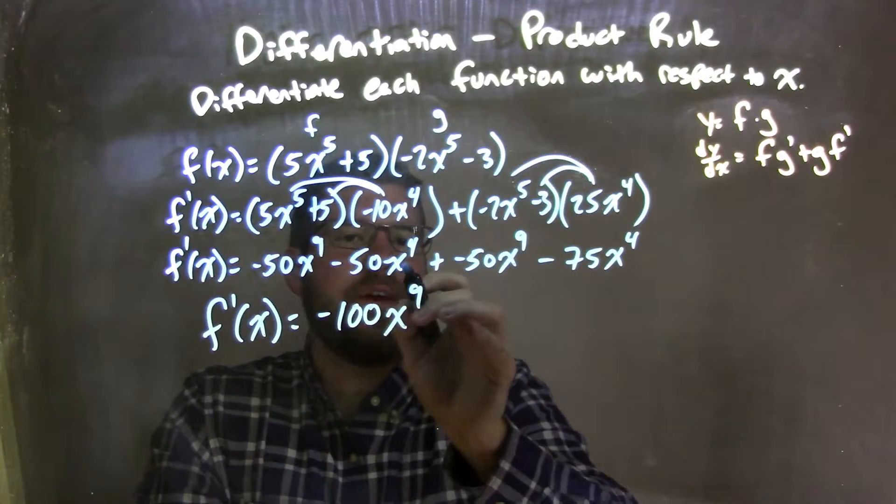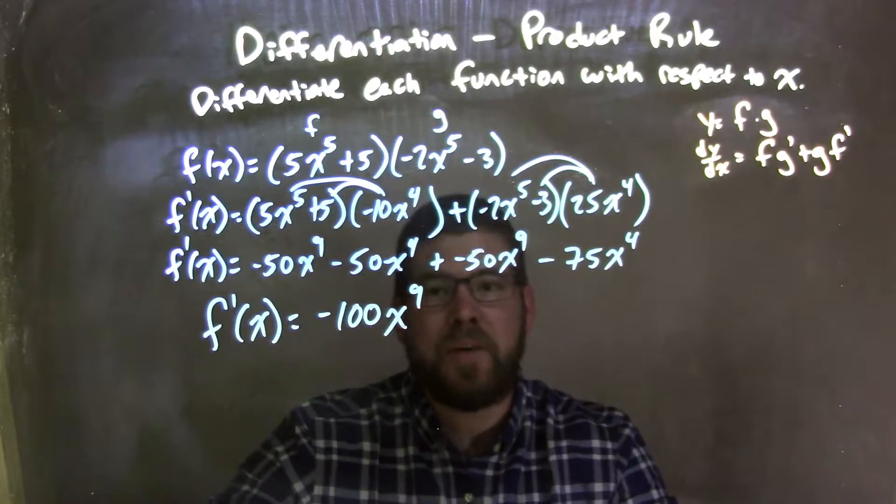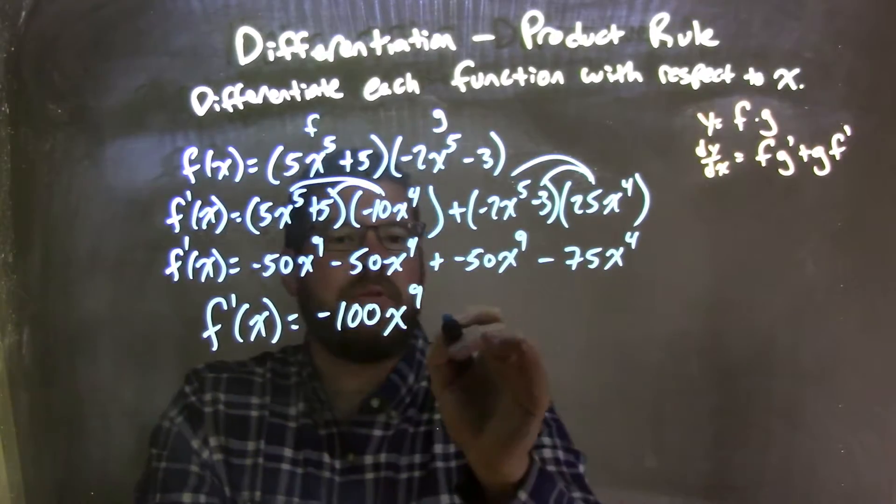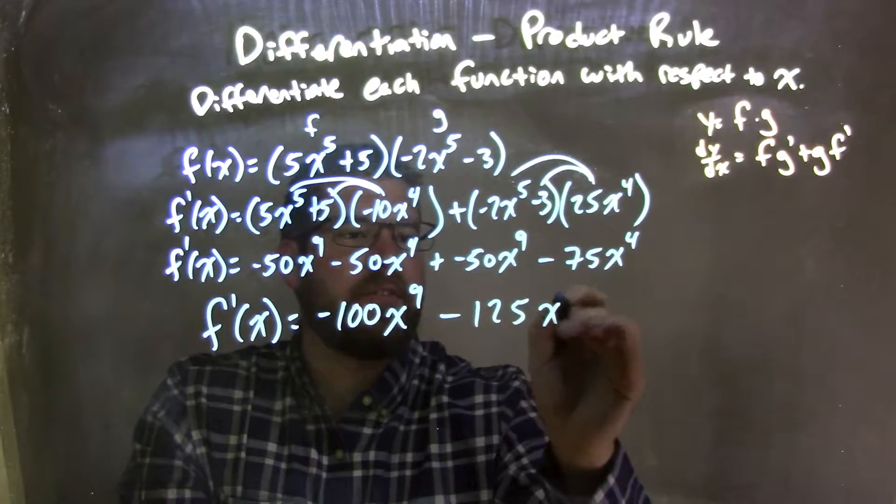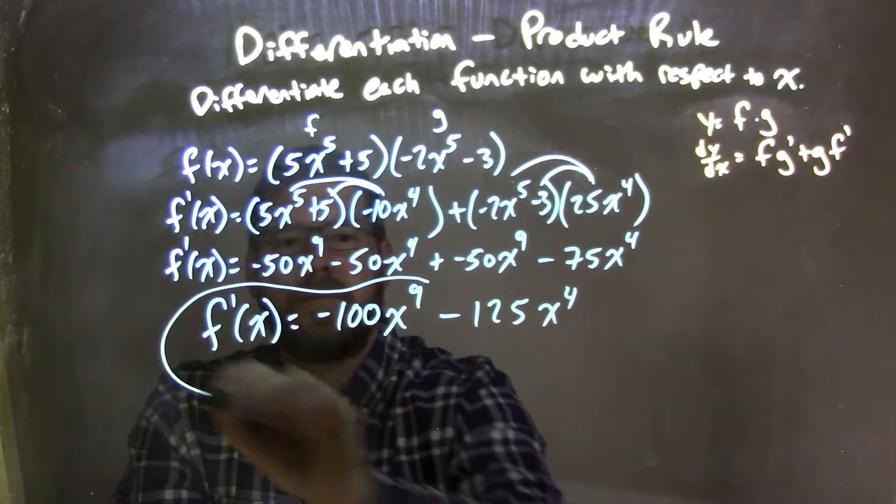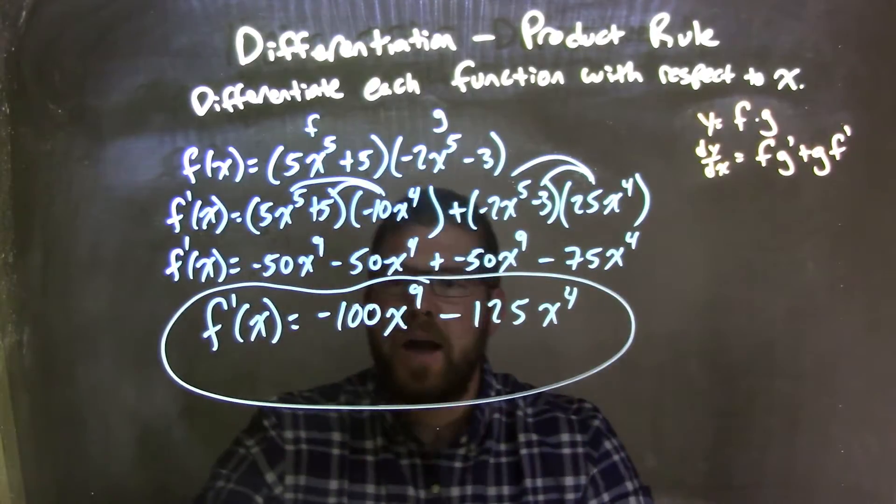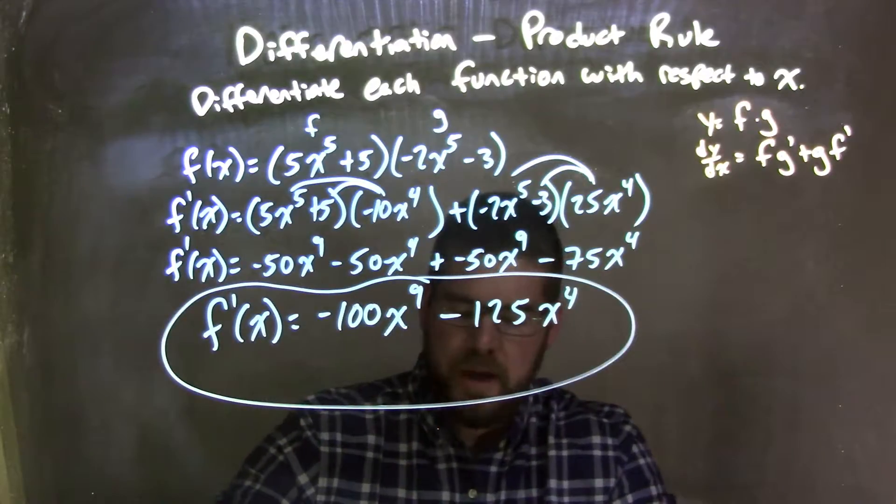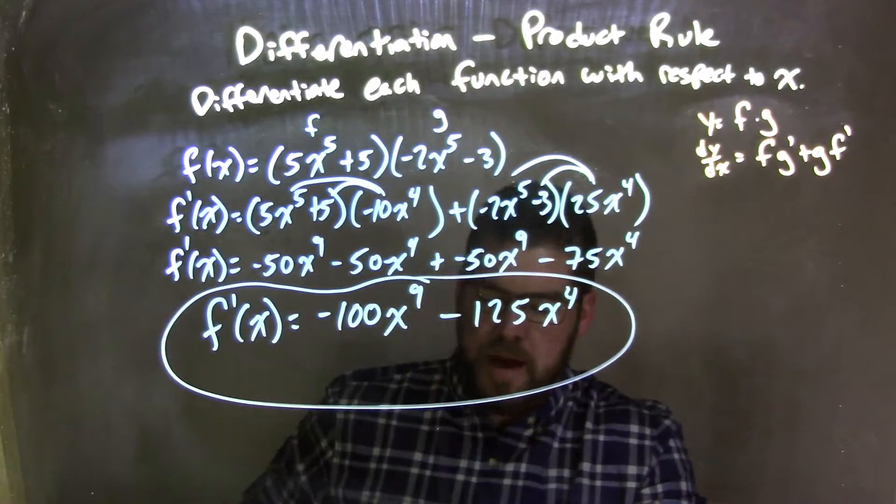And then we have negative 50x to the fourth and a negative 75x to the fourth, which gives us negative 125x to the fourth. And there we have our answer: f prime of x is equal to negative 100x to the ninth minus 125x to the fourth.